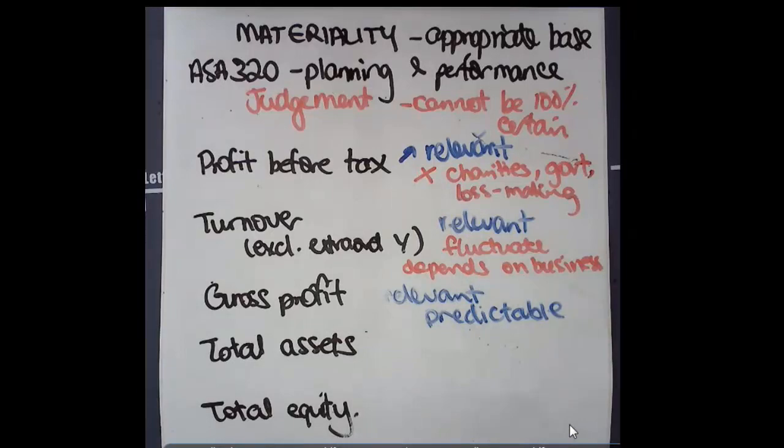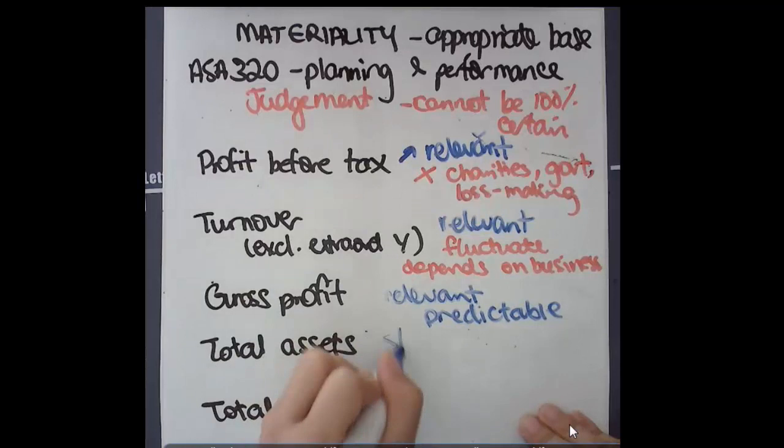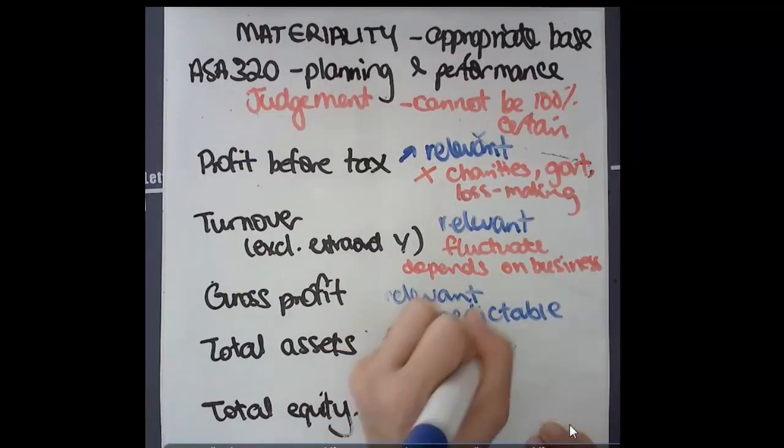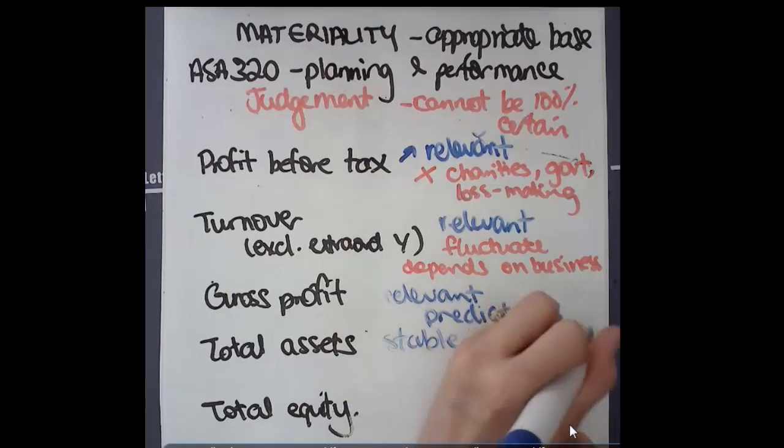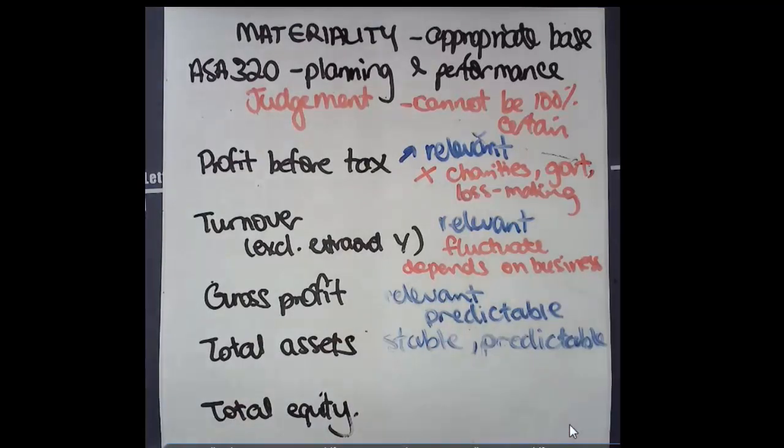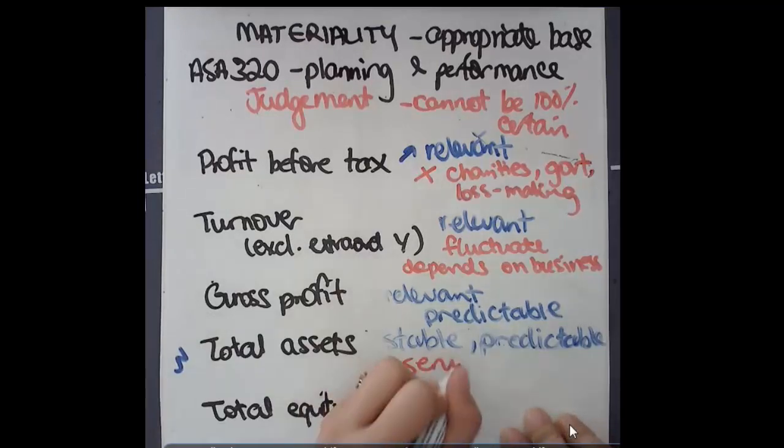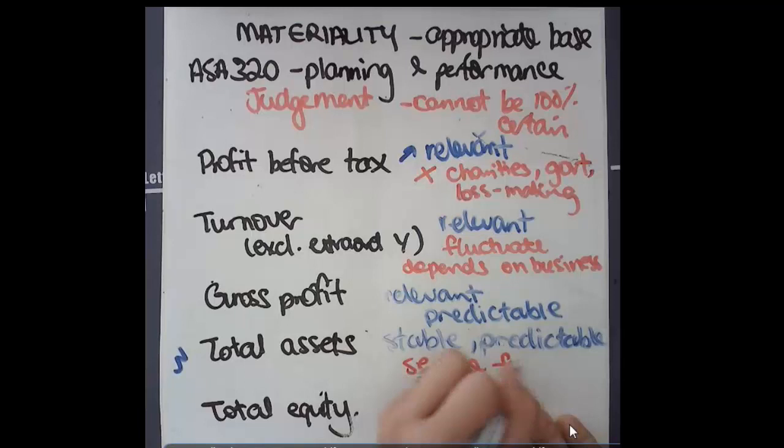We have total assets next. Total assets is great because it's definitely very stable. Property plant equipment tends not to move too much. Companies tend to keep the same inventory levels on hand, so stable and predictable are the good things. But what's not so great about total assets is that it doesn't work too well for service firms because there are no assets, there's not a lot of assets typically for them to use.